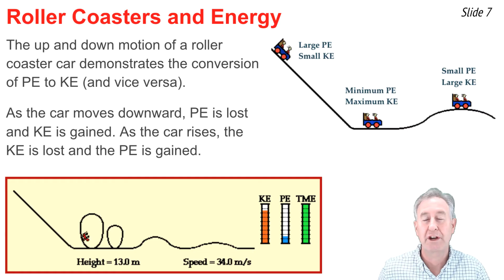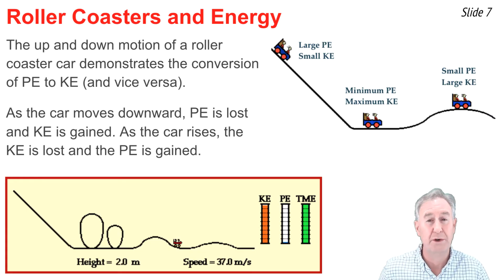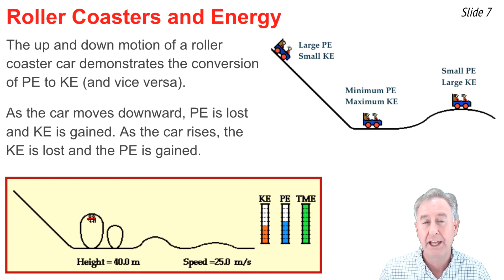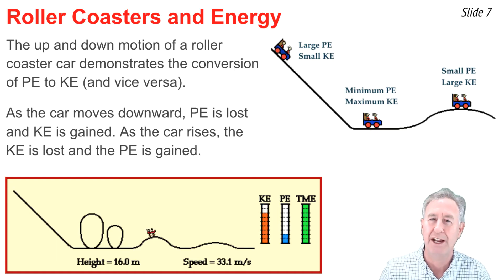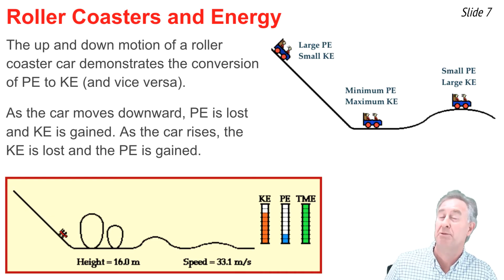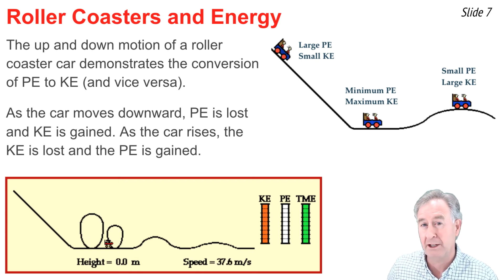The up-and-down motion of a roller coaster car demonstrates the same idea of mechanical energy conservation. On a roller coaster car there are two forces: the force of gravity, a conservative force directed downwards, and the normal force, a non-conservative force directed perpendicular to the track at all locations. As such, it's always at a 90-degree angle to the direction of motion, and whenever a normal force and the direction of motion are at a 90-degree angle, that normal force does not do work upon the object. So we expect mechanical energy conservation — as the roller coaster car moves downwards it loses potential energy and gains kinetic energy, and as it moves upwards it gains potential energy and loses kinetic energy.